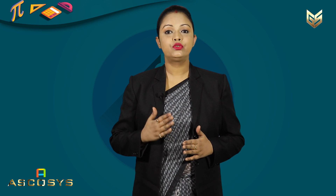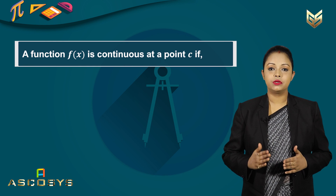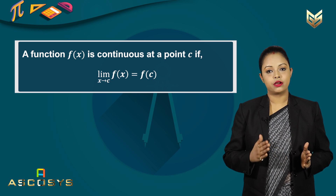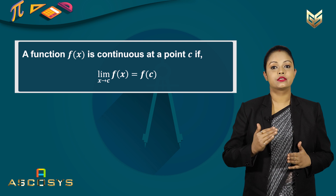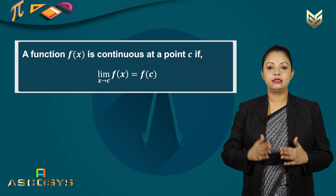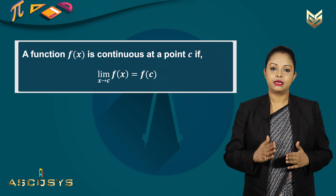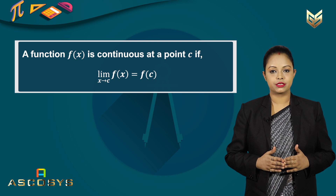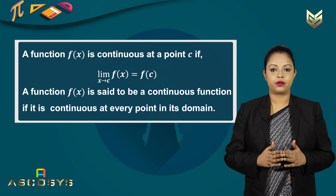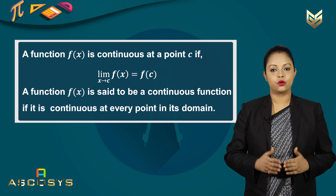Mathematically, how do we define a continuous function? A function f(x) is continuous at the point c if the limit of the function f(x) as x goes to c is equal to the value of the function at c, that means equal to f(c). This definition is for continuity at one particular point. A function f(x) is said to be a continuous function if it is continuous at every point in its domain.